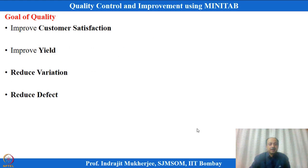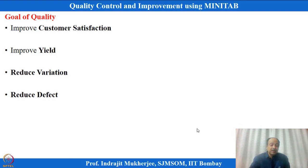The goal of quality is to satisfy customers — customer satisfaction is the primary goal. We also want to improve the yield of the process, meaning output divided by input, aiming for 100 percent yield. Then reduced variation and consistency are important. The goal of quality also includes reducing defects — freedom from defects, right the first time. So customer satisfaction, improved yield, reduced variation, and reduced defects are the goals of any quality improvement project in an organization.